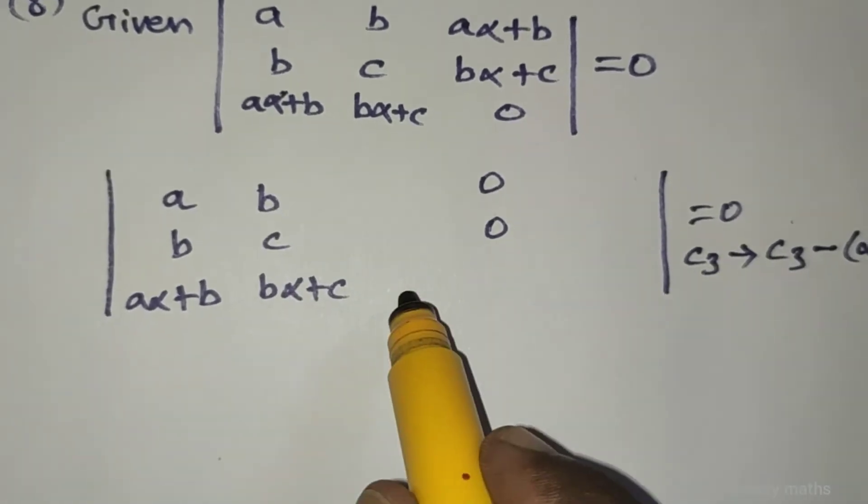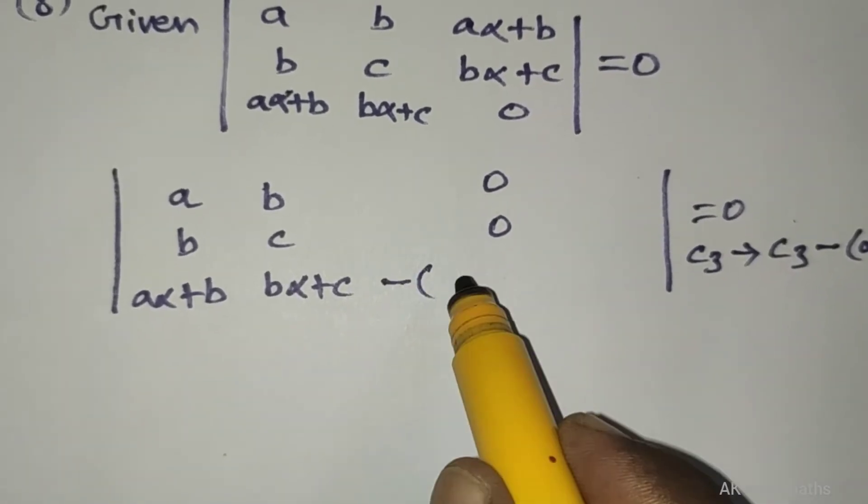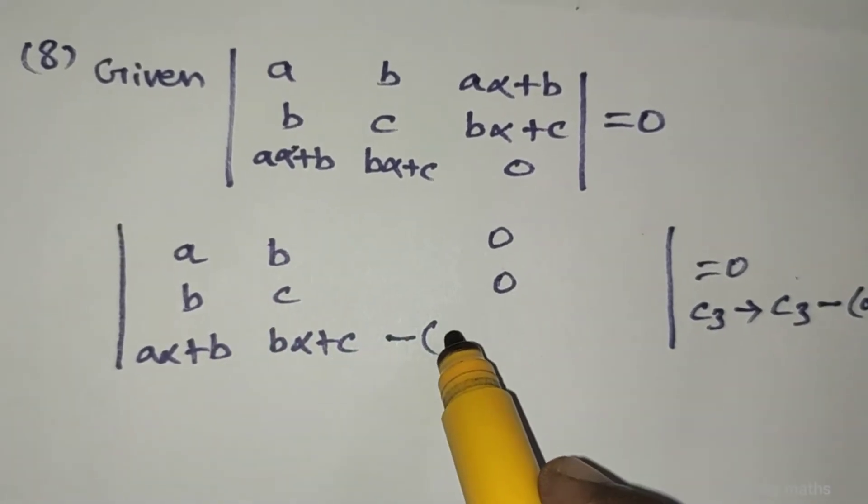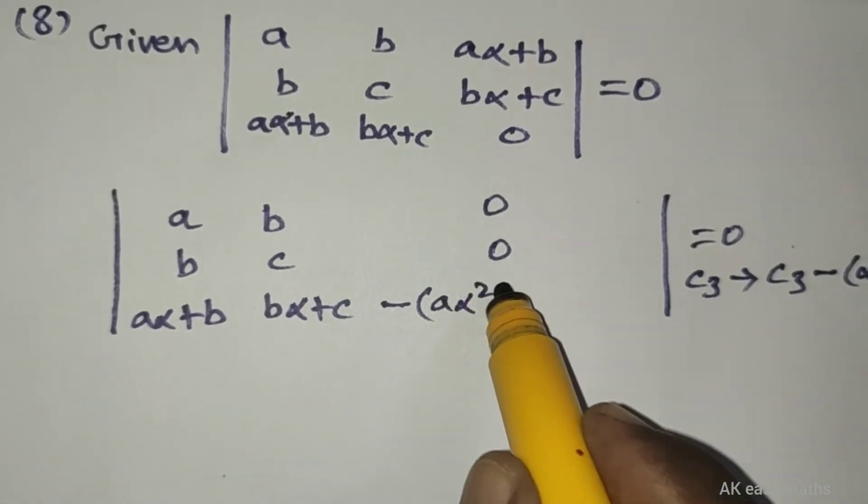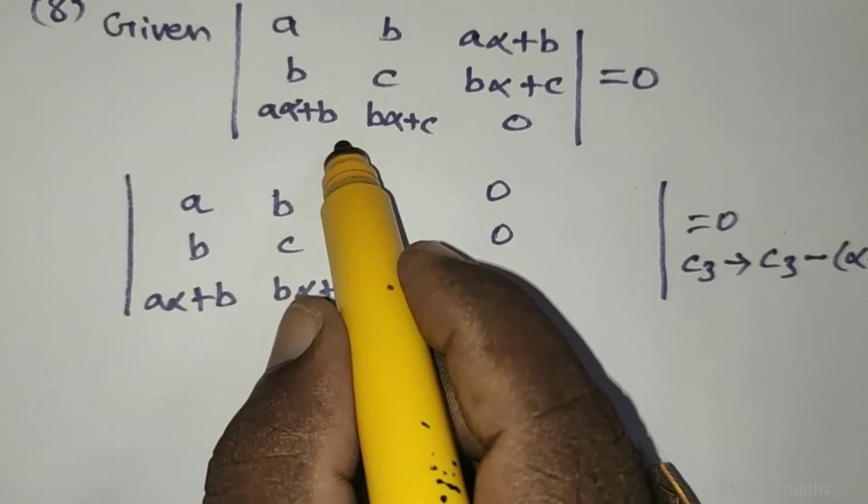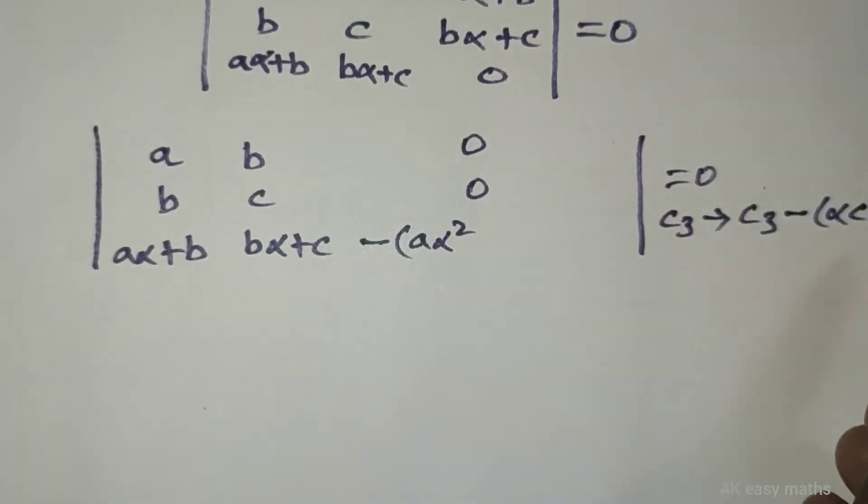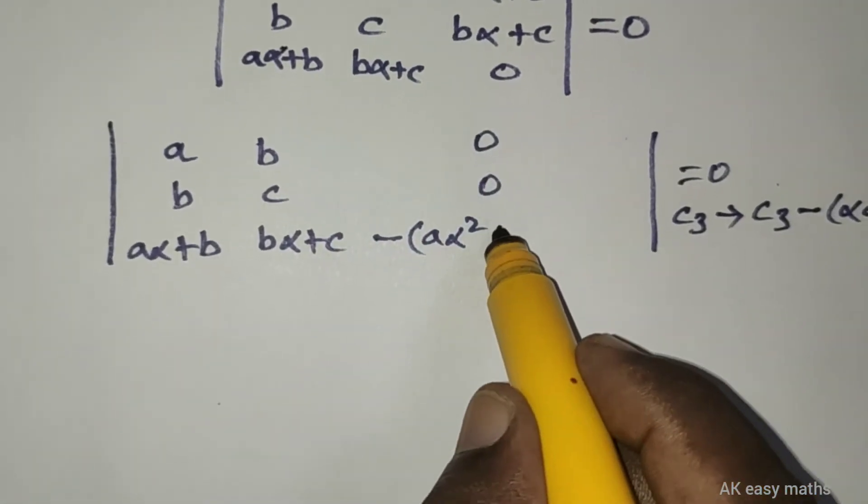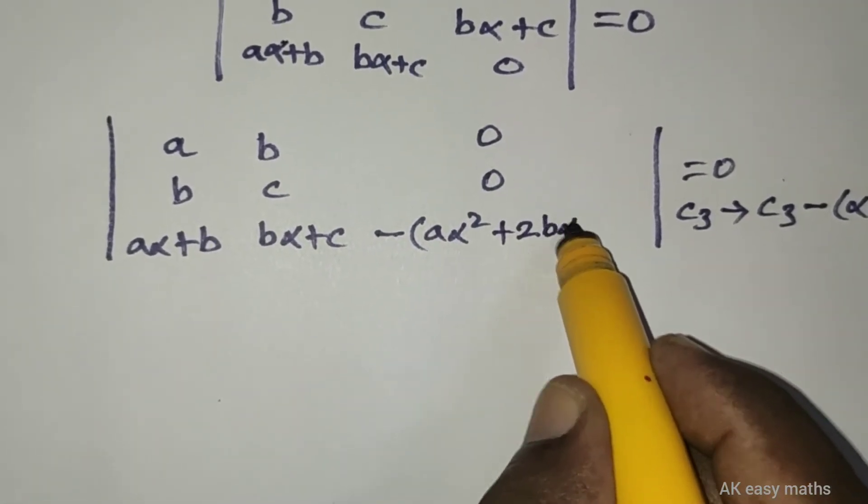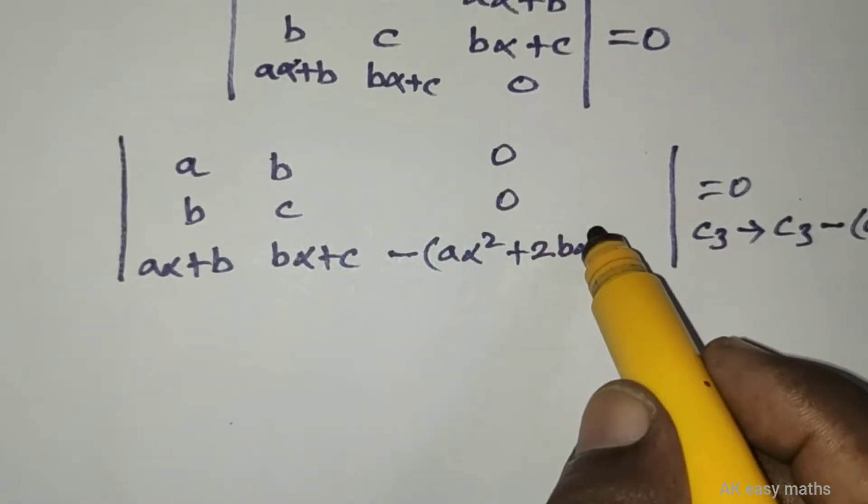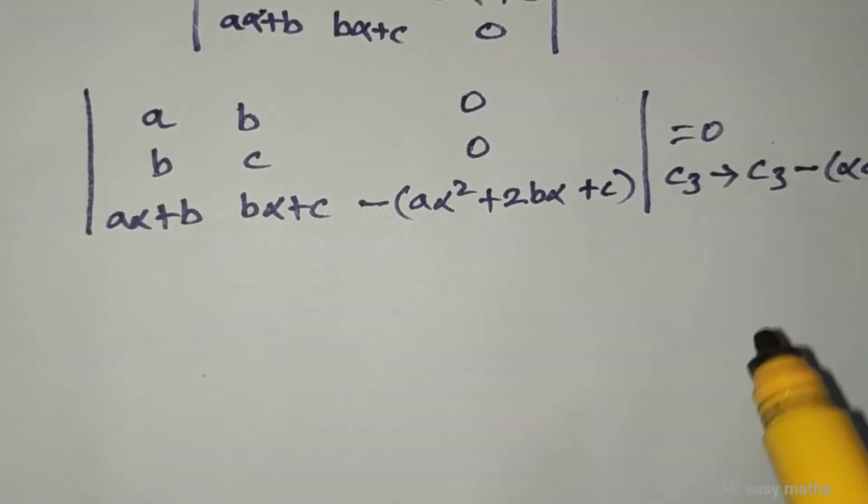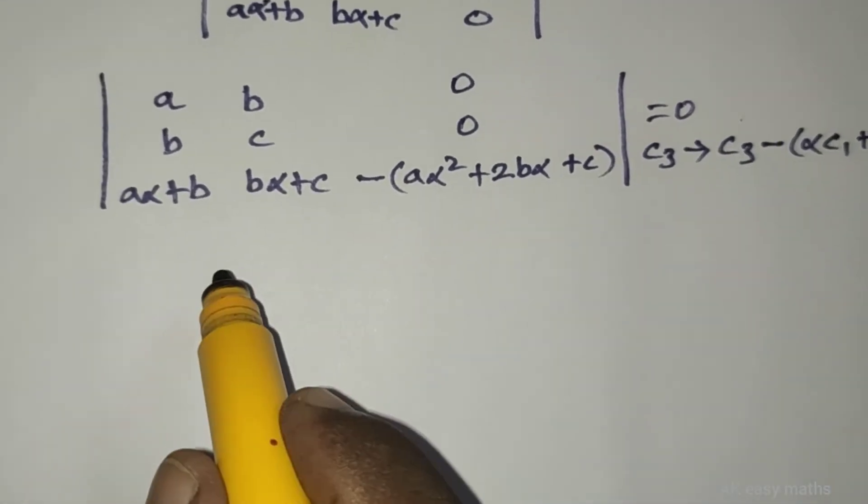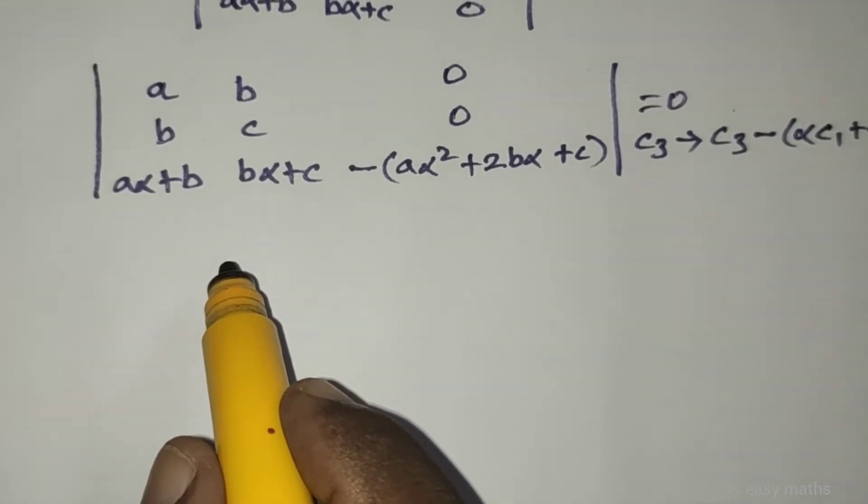When we expand using minus alpha multiplication, we get minus a alpha squared. With c2 plus b alpha, the total is 2b alpha. Adding c, we have minus a alpha squared plus 2b alpha plus c.